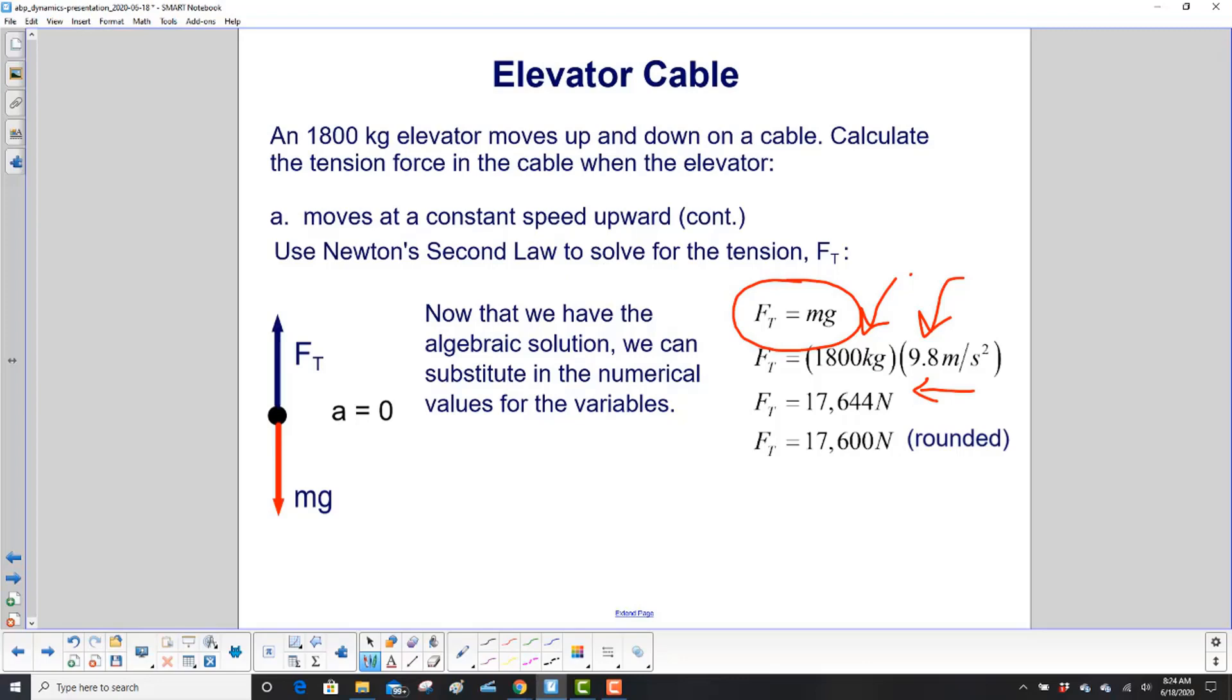We put in our mass and our acceleration and get 17,644 newtons. We're not going to worry about significant figures too much in this class, but typically if your givens have two or three numbers, you want two or three in your answer. We're going to standardize a rule: have three digits in your answer. So we don't need the 44, and we round down to 17,600 newtons.